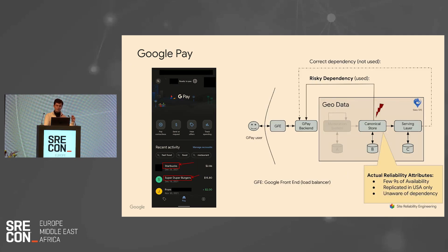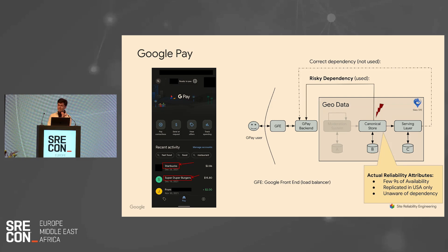What's really interesting about this particular case is that GPay actually used a back end API called the canonical store, which was meant for internal usage only. The canonical store didn't have any of those requirements. And here's the kicker: the service owners of the canonical store weren't even aware that GPay depended on them. When this risky dependency was added a few years ago, the canonical store became a critical back end for GPay. We don't necessarily know why the canonical store was chosen, but perhaps an alternative back end didn't exist at the time, or the engineer was more familiar with it.